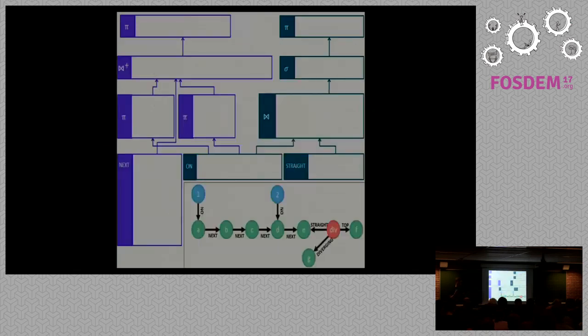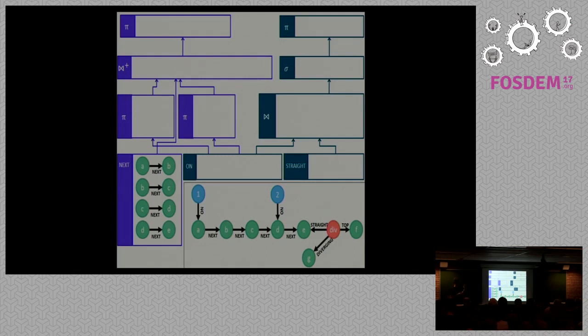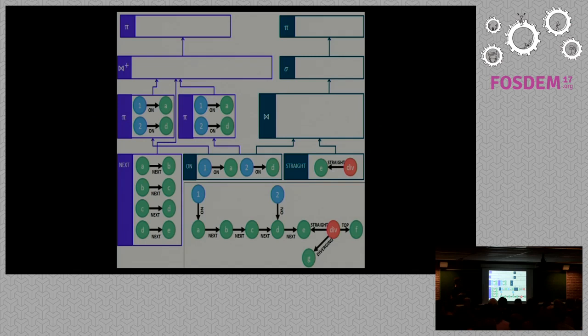So how does this RETE network work in practice? We have another animated slide for that. Basically we have a bit more indexers and then we evaluate the projections. We calculate the join. We now find that train 1 and 2 are too close together, so we issue a warning to the user that 1 and 2 are too close together. 1 is on A and 2 is on D.